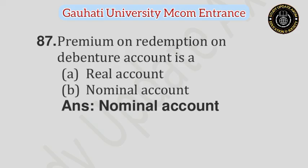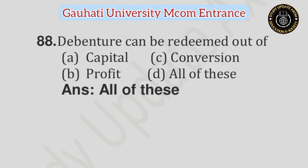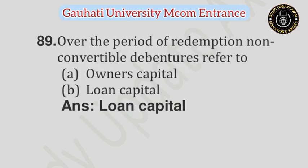Question number 87: Premium on redemption on debenture account is — Option A: Real account, Option B: Nominal account. Answer is Nominal account. Question number 88: Debentures can be redeemed out of — Option A: Capital, Option B: Profit, Option C: Conversion, Option D: All of these. Answer is All of these. Last question: Non-convertible debenture refers to — Option A: Owner's capital, Option B: Loan capital. Answer is Loan capital.